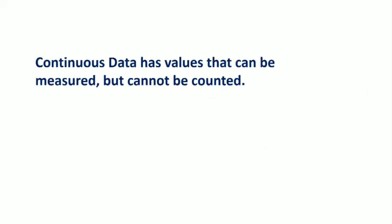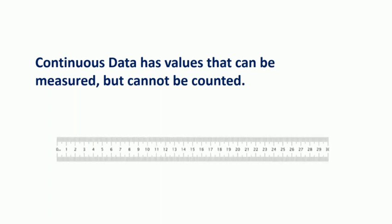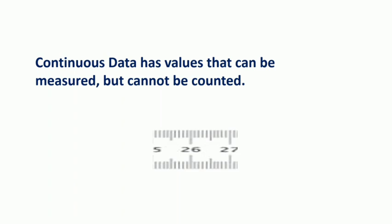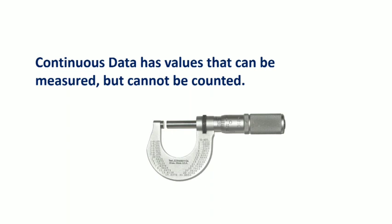Looking at continuous data. Continuous data has values that can be measured but not counted. Let me give you an illustration. Suppose if I had this ruler. Observe carefully what happens between these two points, the 26 points and the 27 points. There are 10 subdivisions there. We can see that. But could we have more than 10 subdivisions within these two values? Of course we can. We can measure up to one thousandth of a millimeter. This is usually done with this instrument. And here is where continuous data comes in. There is no limit to the amount of subdivisions you can get within two units or within two counting numbers. And for this reason, we say the data is continuous.